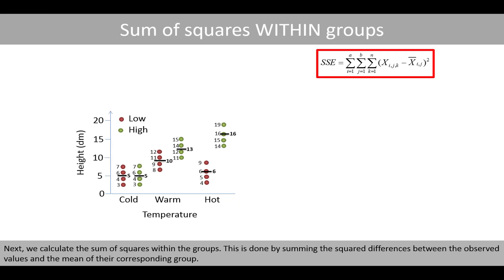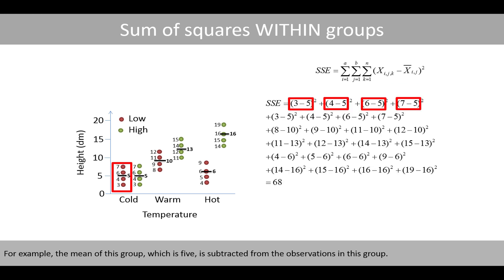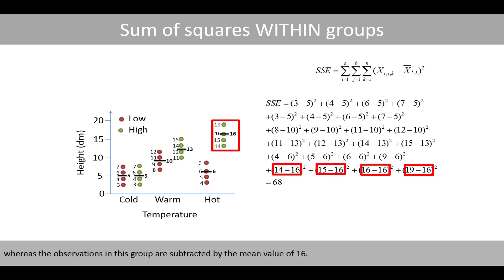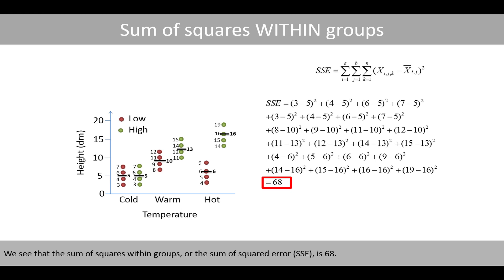Next, we calculate the sum of squares within the groups. This is done by summing the squared differences between the observed values and the mean of their corresponding group. For example, the mean of this group, which is 5, is subtracted from the observations in this group, whereas the observations in this group are subtracted by the mean value of 16. We see that the sum of squares within groups, or the sum of squared error, SSE, is 68.